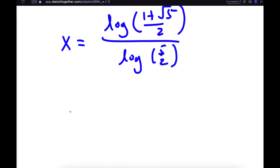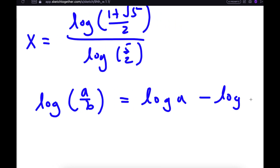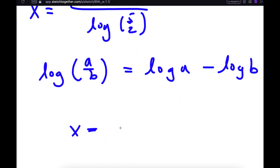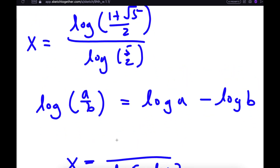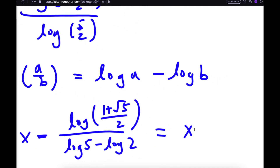Now if I have something in the form log a over b, this equals log a minus log b. So log 5 over 2 equals log 5 minus log 2. This gives me x equal to log of 1 plus the square root of 5 over 2, divided by log 5 minus log 2. Plugging this into a calculator, x is approximately equal to 0.525.